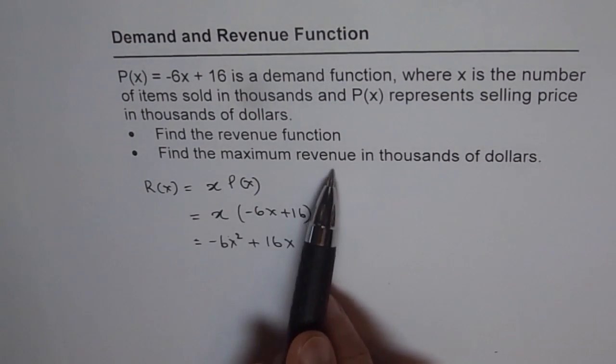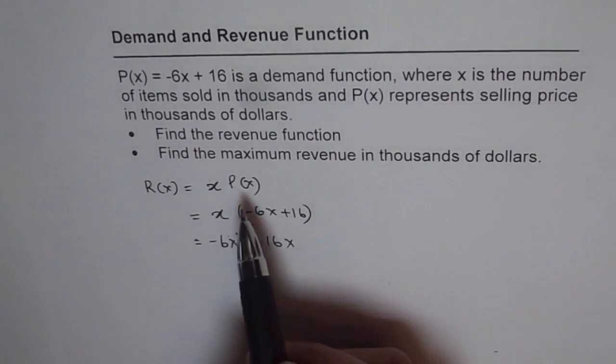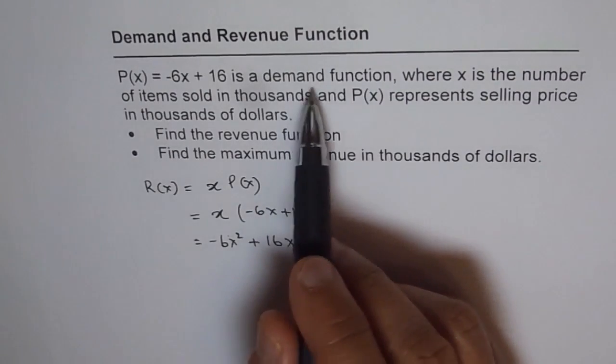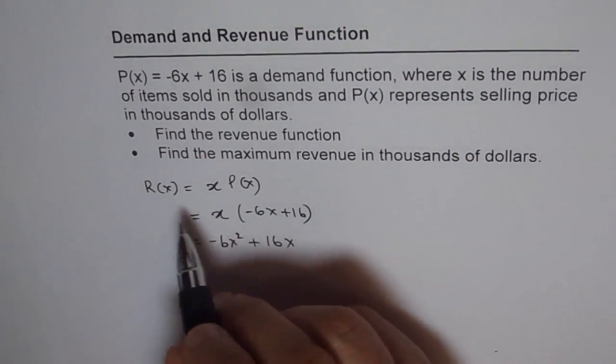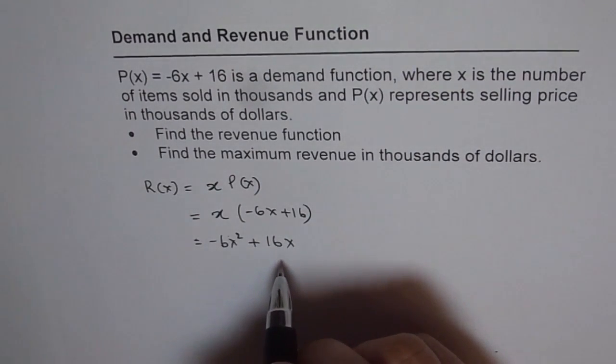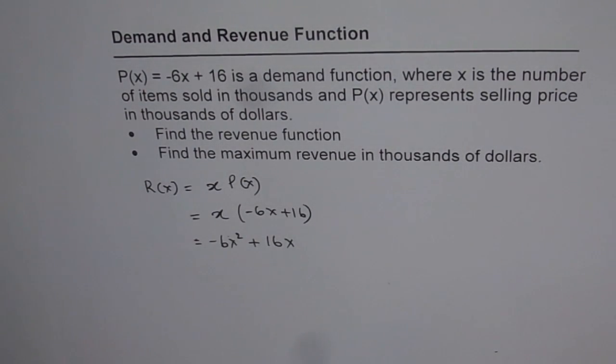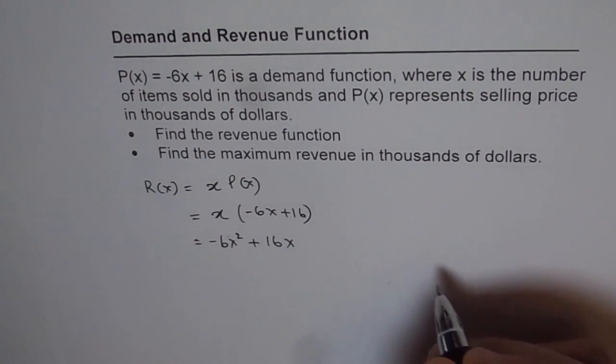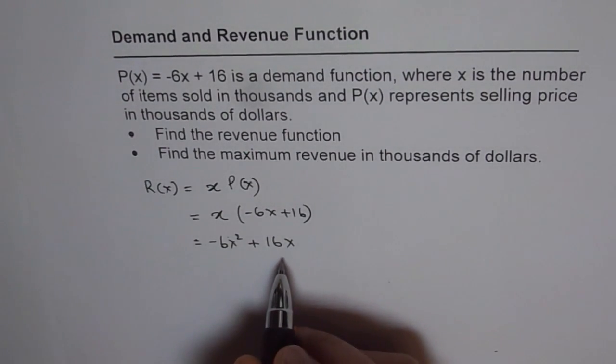We need to maximize revenue in thousands of dollars. R(x) is in thousands of dollars since the demand itself is in thousands of dollars. So we have a quadratic equation which needs to be maximized. To maximize this, we can use completing the squares method or partial factoring. You can even do it by -b/2a.